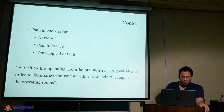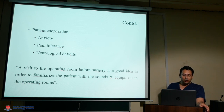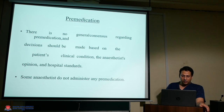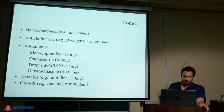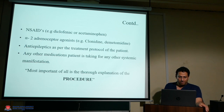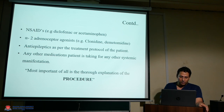Patient cooperation is a must. Anxiety reduction, pain tolerance, and neurological deficits must be addressed. A visit to the operating room before surgery is a good idea to familiarize the patient with sounds and equipment. Regarding premedication, there is no general consensus — the decision should be based on the patient's clinical condition and the anesthetist's opinion and hospital standard. Medicines used include benzodiazepines, anticholinergics, antiemetics, antacids, opioids, alpha-2 adrenoceptor agonists, and anti-epileptics as per the treatment protocol. Most important of all is a thorough explanation of the procedure.